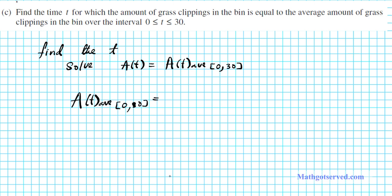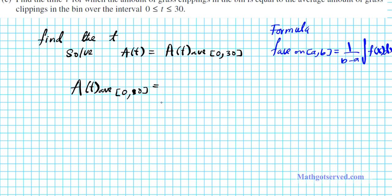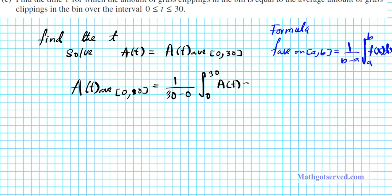Let's review the formula for average value. The average value of f on an interval [a, b] is (1/(b−a)) times the definite integral from a to b of f(x) dx. So the average value of A(t) here is (1/30) times the integral from 0 to 30 of A(t) dt.